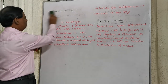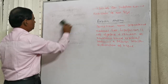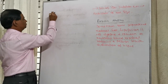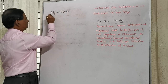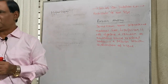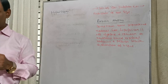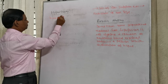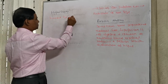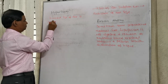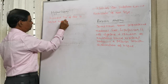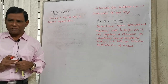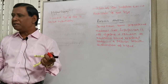Now come to another cellular adaptation — hypertrophy. We can say it is the reverse of atrophy. Reduction of size of a cell is called atrophy; if the size of a cell is increased, it is called hypertrophy. So increased size of a cell is called hypertrophy. In atrophy there is decreased cell substances; in hypertrophy there is increased number of cell substances.